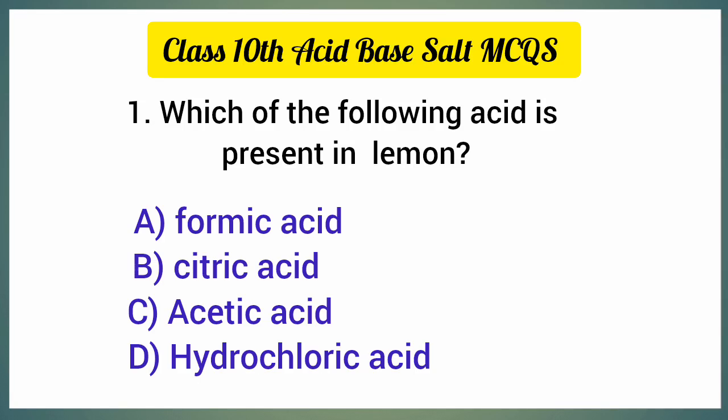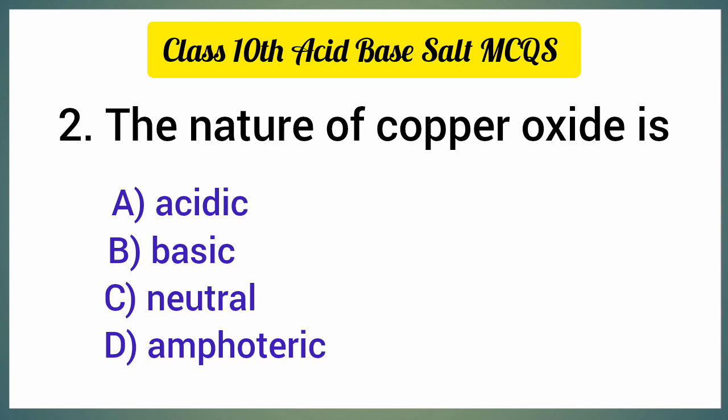Class 10 Acid, Base and Salt MCQs. Question 1: Which of the following acid is present in lemon? The correct option is option B, citric acid. Question 2: The nature of copper oxide is — the correct option is option B, basic.